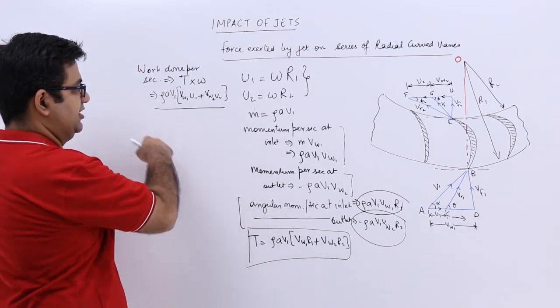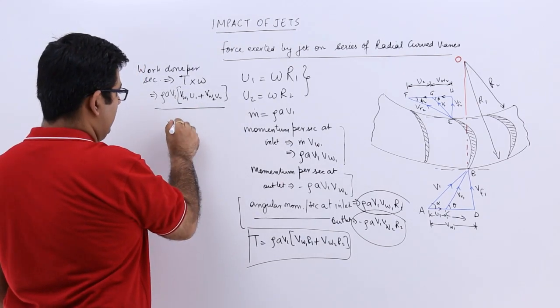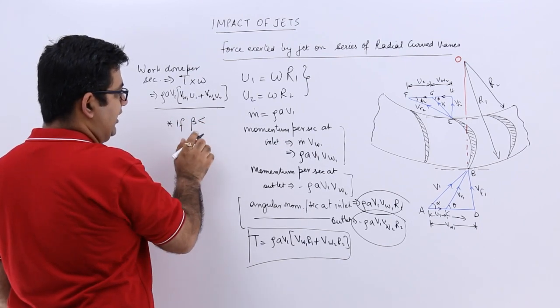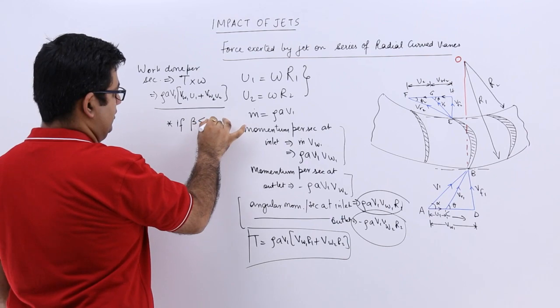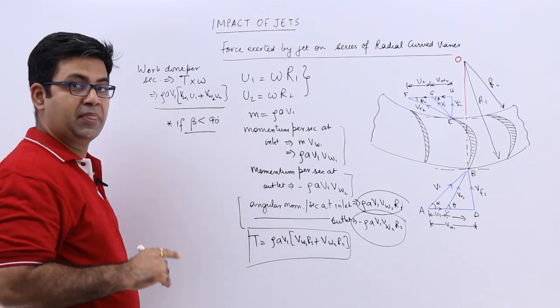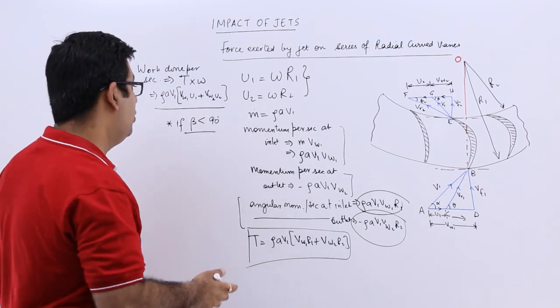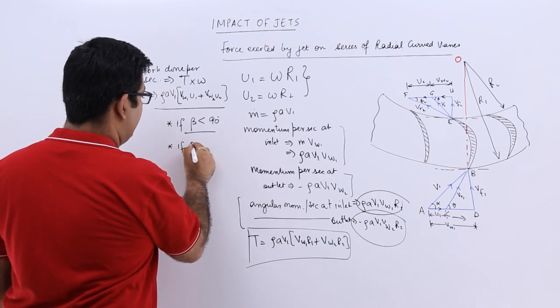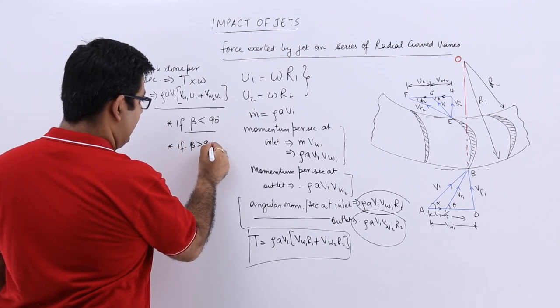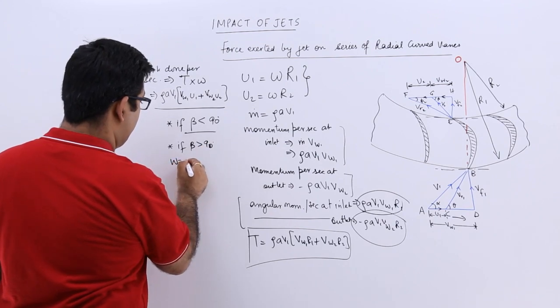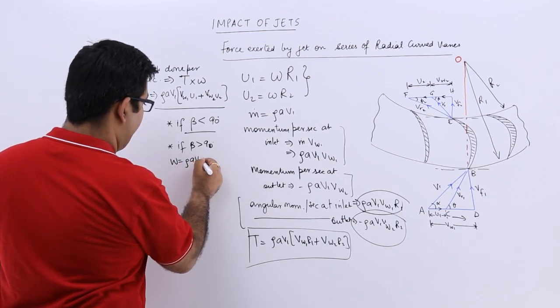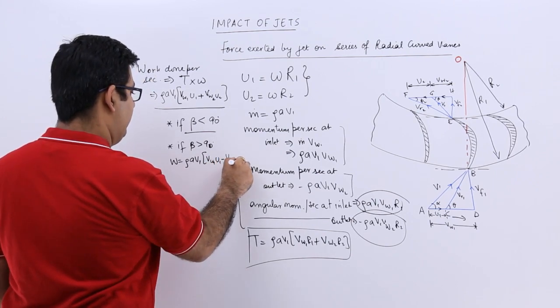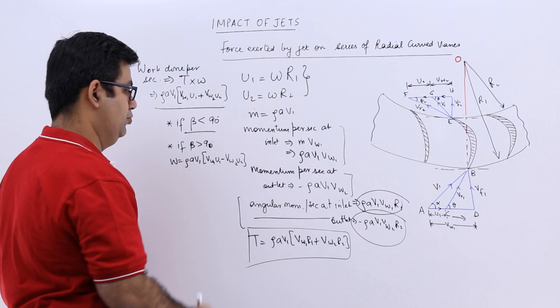Now, this expression is only true if beta is less than 90 degrees. But if the beta becomes more than 90, that is it becomes obtuse, then the work done will become ρAv1 into vw1u1 minus vw2u2.